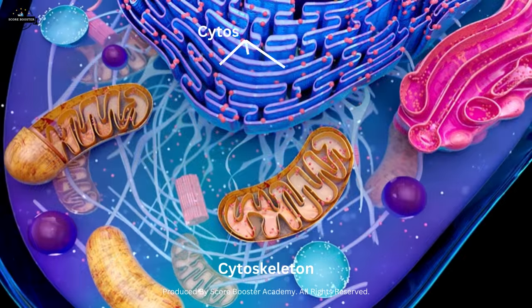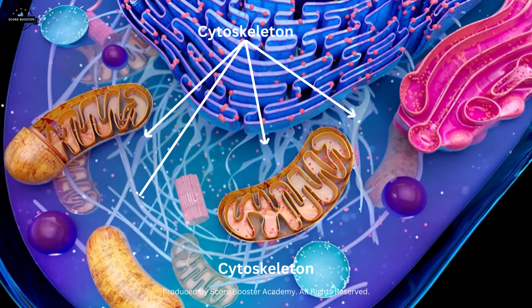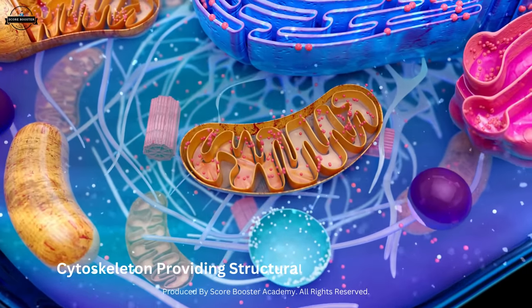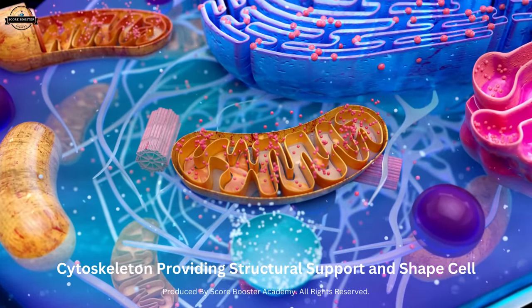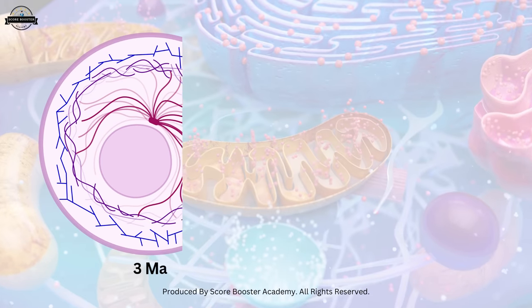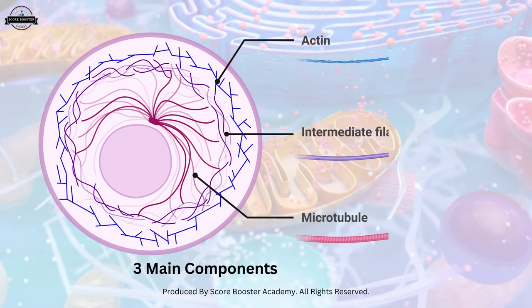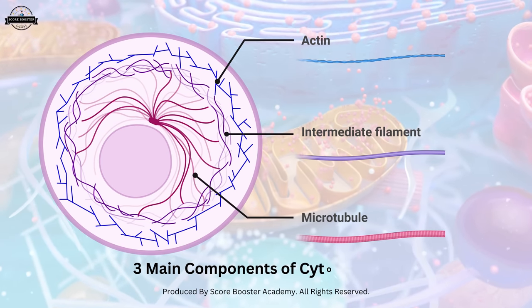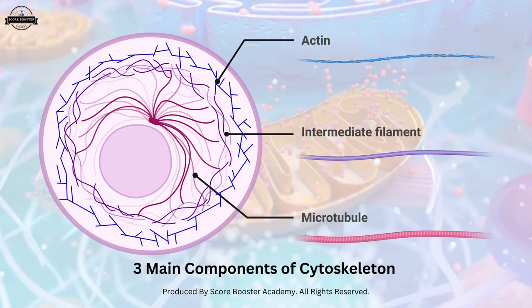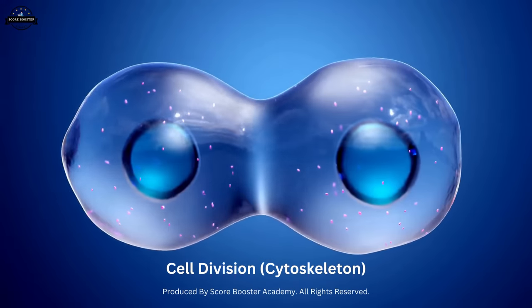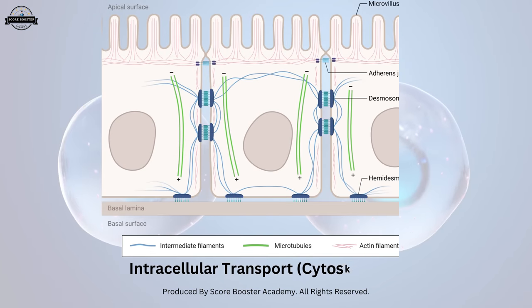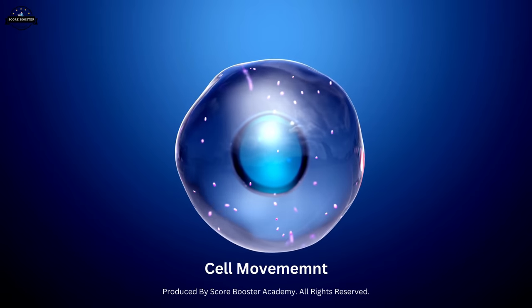The cytoskeleton is a network of protein filaments that provides structural support and shape to the cell. It consists of three main components: microtubules, microfilaments, and intermediate filaments. The cytoskeleton also plays a crucial role in cell division, intracellular transport, and cell movement.